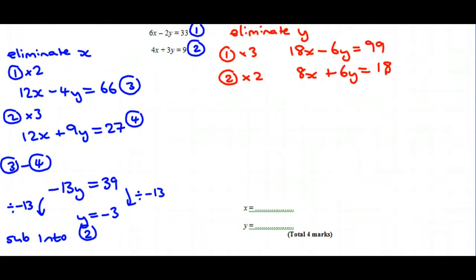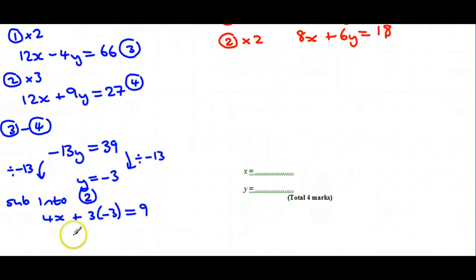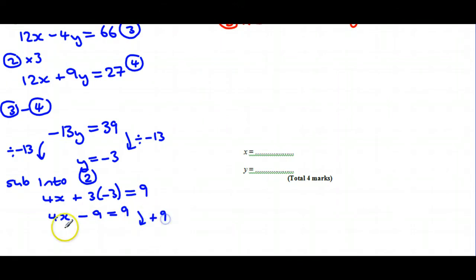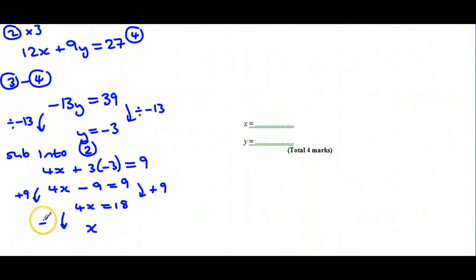So for that one, if I substitute that back into 2, we'd have 4x plus 3 lots of minus 3 equals 9. So 4x minus 9 would be equal to 9. Adding on 9 to both sides, because now it's just basically a little linear equation to solve, we'd end up with 4x equals 18. And if we divide by 4, 4 goes into 18 four times with half of it left over. So we've got our y and our x.